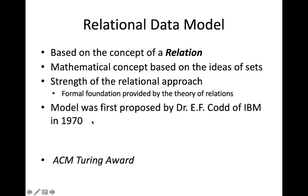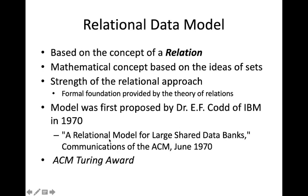The relational data model was proposed by Dr. E.F. Codd of IBM in 1970. He received the ACM Turing Award, which is considered to be the Nobel Prize in computer science. He published a research paper titled 'A Relational Model for Large Shared Data Banks' in Communications of the ACM in June 1970. Almost all databases since then have been developed using this relational data model.